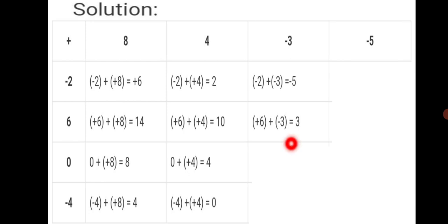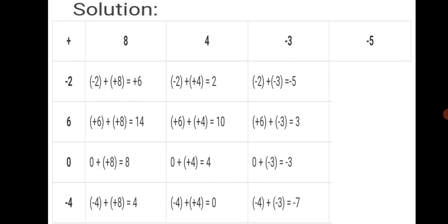Next column: minus two plus minus three — both integers are negative, same sign, so add: two plus three is five, and since both are negative the answer is minus five. Next: six plus minus three — different signs, subtract: six minus three is three, and the bigger number six is positive, so the answer is three.